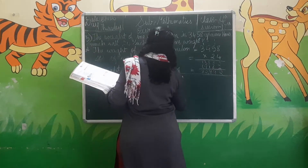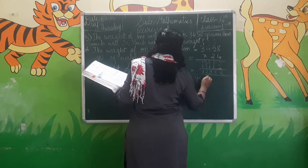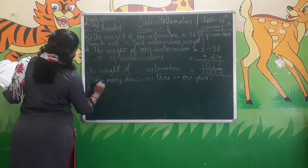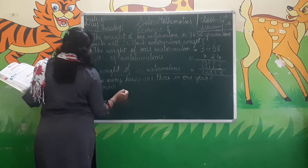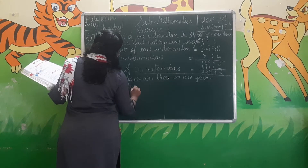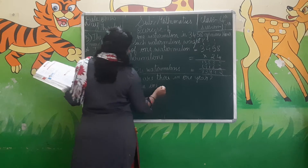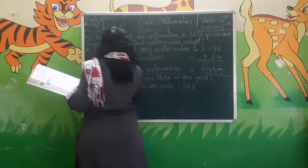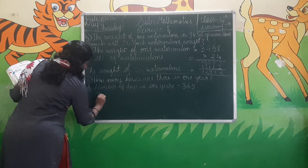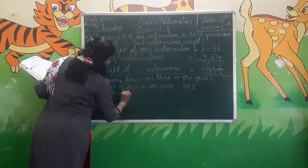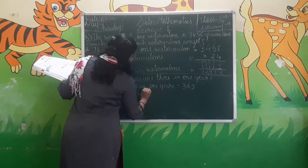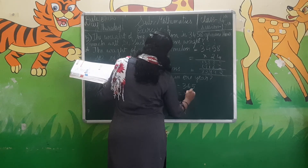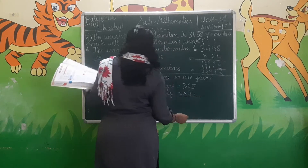How many hours are there in 1 year? The number of days in 1 year is 365. The number of hours in 1 day is 24. So you have to write the number of hours in 1 day and then do the multiplication.